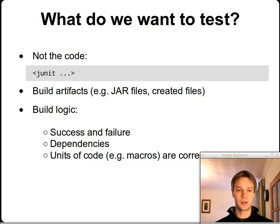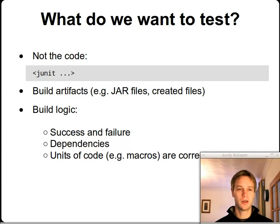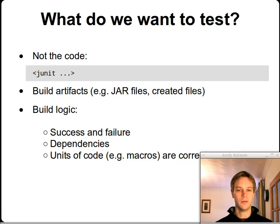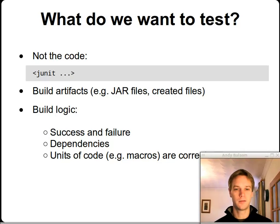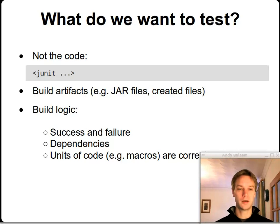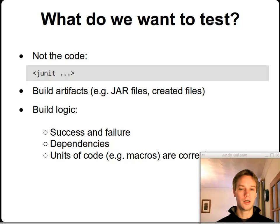There are two parts to that. One is testing the build artifacts — the stuff that got made when you ran your build file, like JAR files, ZIP files, stuff that got copied, whatever your build produces, maybe some deployment somewhere. The other part is testing that the actual logic within your build file is correct: that your build fails when something goes wrong and succeeds when all is well, that dependency chains are correct, and that particular units — for example a macro or a target — are correct. That might mean writing something you'd call a unit test, which doesn't touch the file system, just checks your logic.